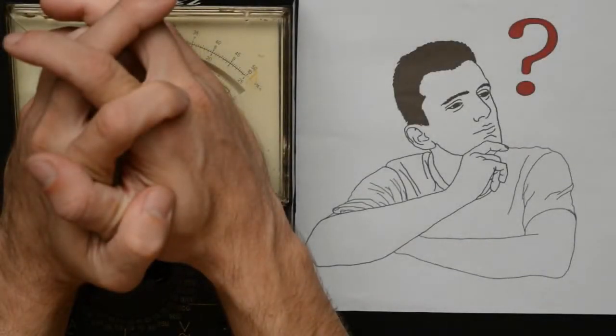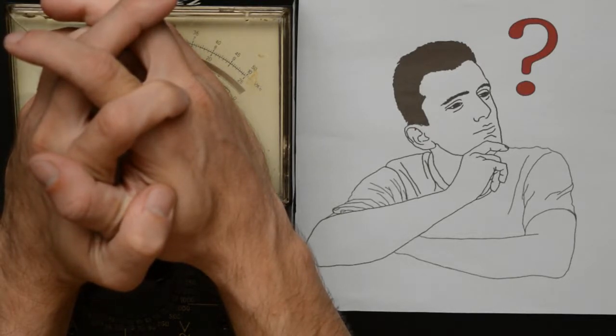Ever wondered how an old analog milliampere-based Romanian-built multimeter looks like on the inside? No? That means you're a normal person, good for you.